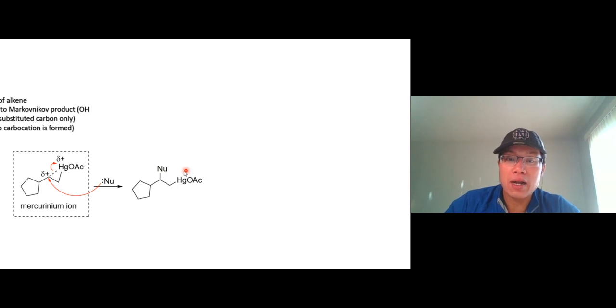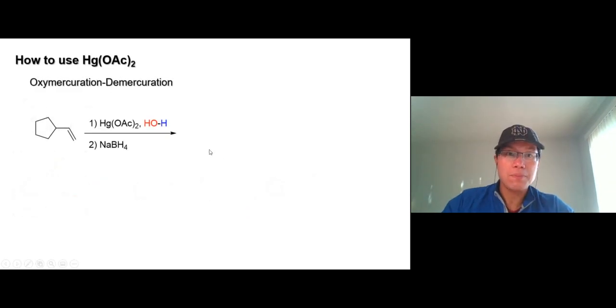And then we have to remove this mercury by adding sodium borohydride. We call it demercuration. Remove mercury. And ta-da, we get the product right away. No carbocation, no rearrangement. So here's in detail. This is how we use it. Let's take a look at the next video.